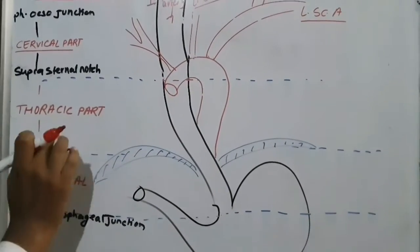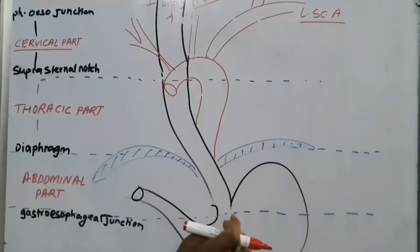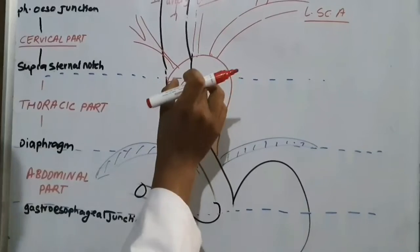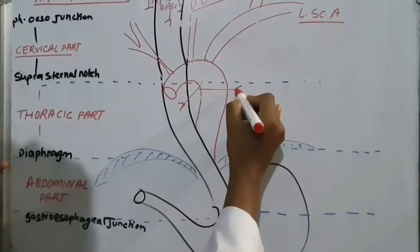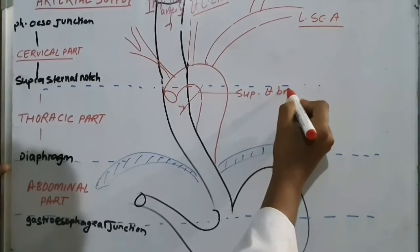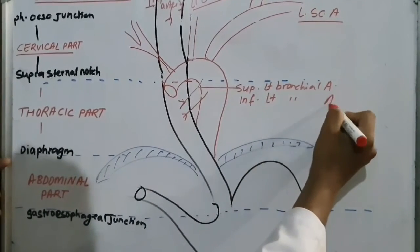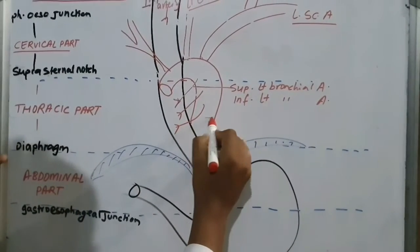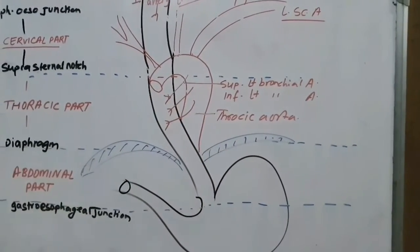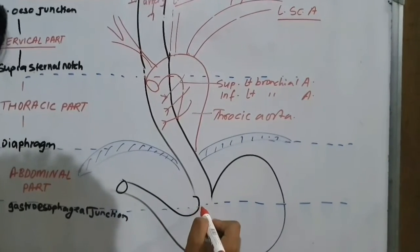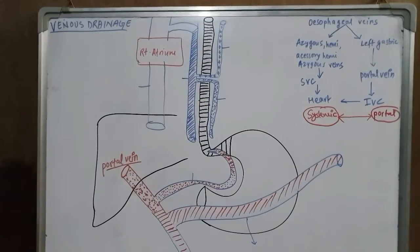The thoracic part extends from the suprasternal notch to the diaphragm, and the abdominal part from the diaphragm to the gastro-oesophageal junction. The thoracic part receives arterial supply from the superior and inferior left bronchial arteries and the oesophageal branches of the descending thoracic aorta. From below, it also receives supply from the left gastric artery.